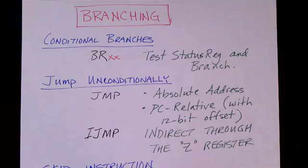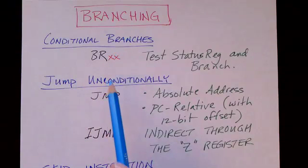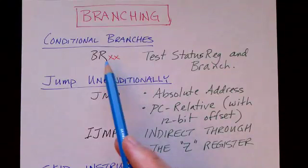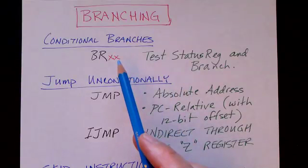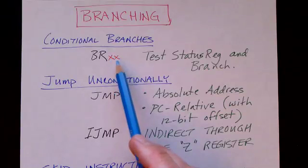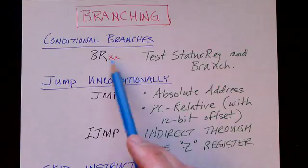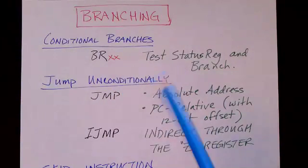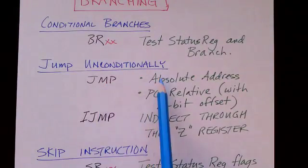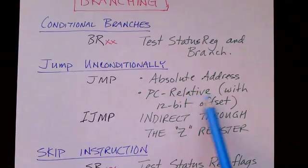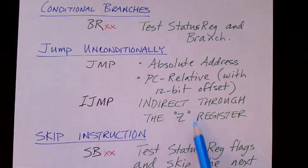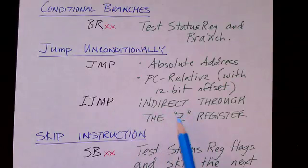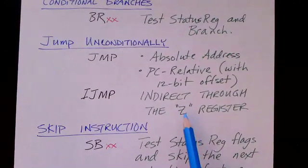There are a number of instructions for transferring the flow of control, including conditional branch instructions and unconditional jump instructions. Each conditional branch instruction tests the status register in a different way and either branches or does not branch. There are many different condition code tests: equal, less than, greater than or equal, negative, overflow, and so on. There is a jump instruction with an absolute address, a program-counter-relative jump with a 12-bit offset, and an indirect jump using the Z register as the address — useful for implementing switch statements and function pointers.